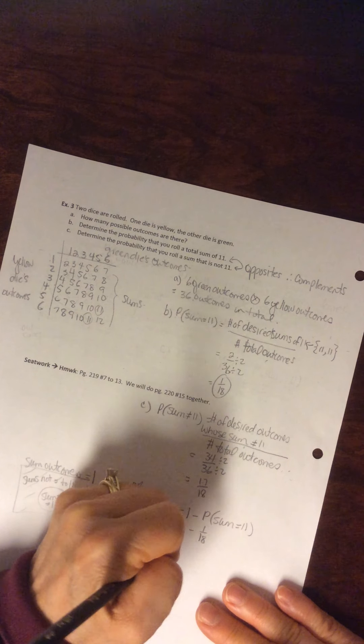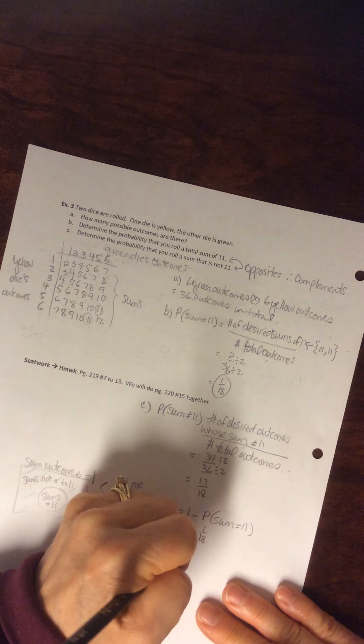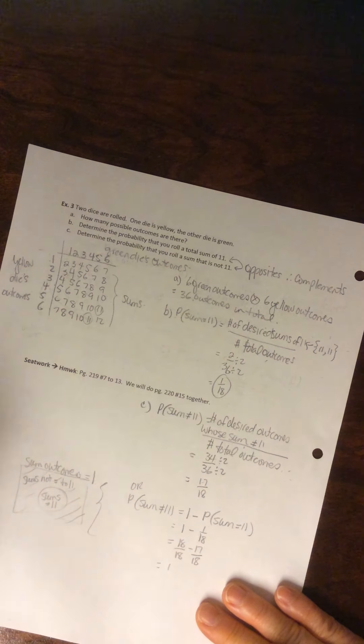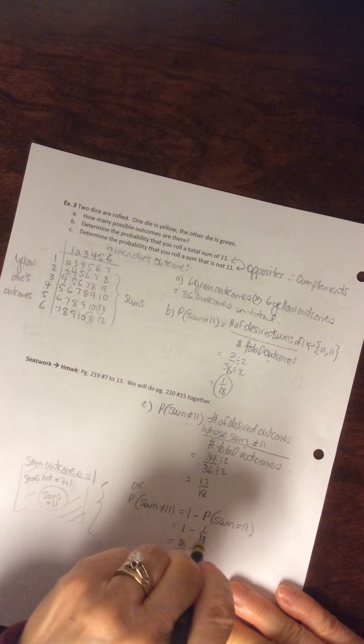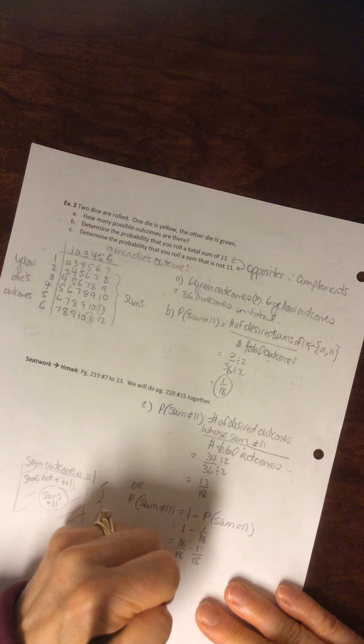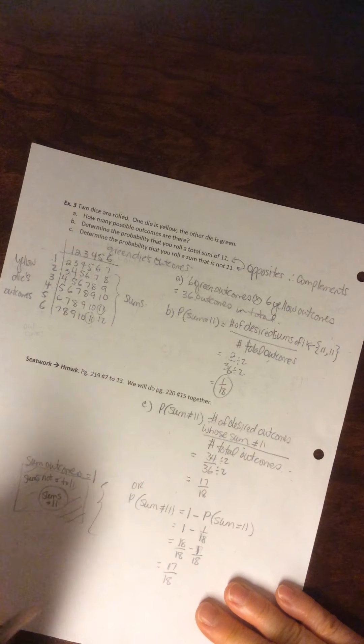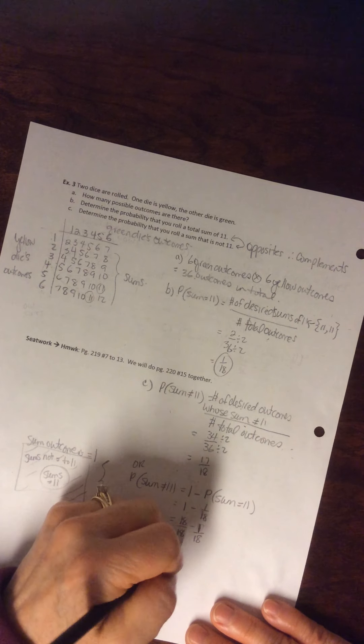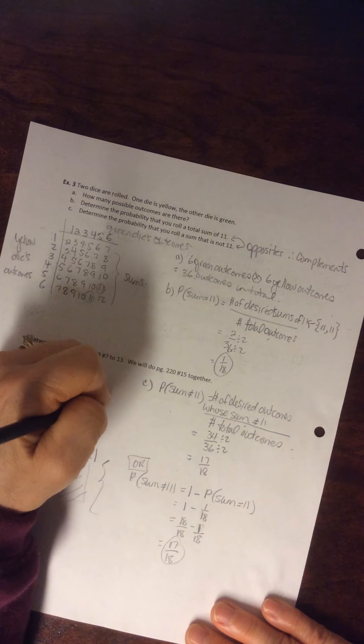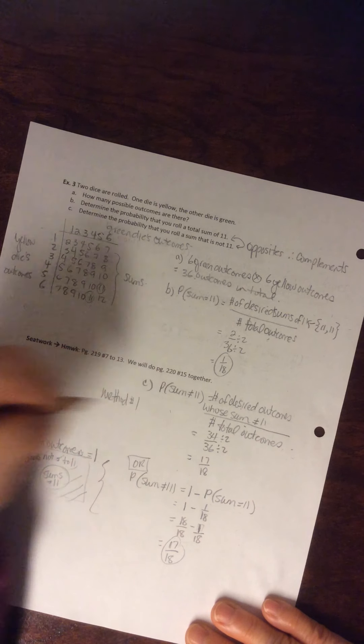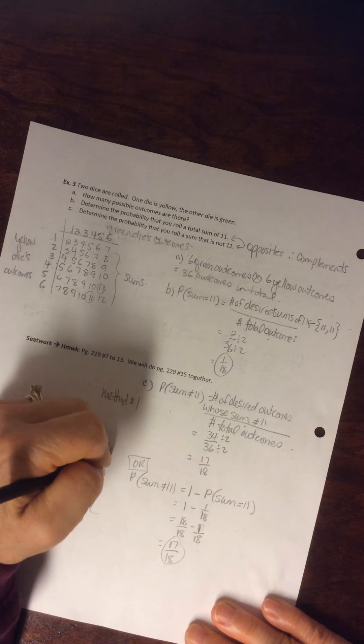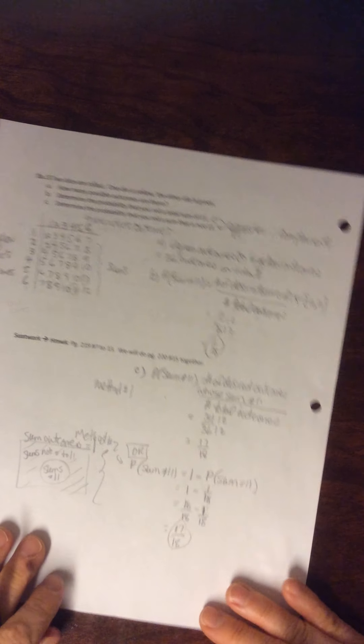So we say it's the same as 1 minus the probability of the sum being 11. It's the same as 1 at 18. So to subtract, you need common denominators. Oops, he's getting ahead of myself here. And 17 out of 18 is the same. So that method there, okay, so method 1 or method 2. Right? Okay.